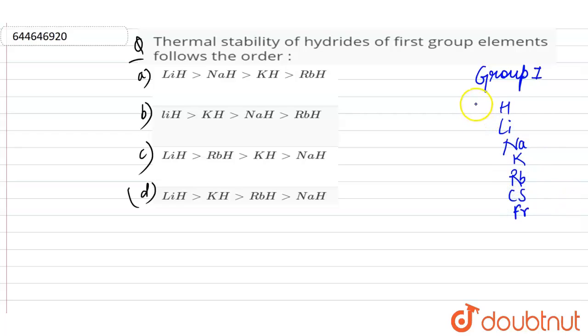As we move from top to bottom in a group, the size of alkali metals—these are alkali metals—increases. So the bond dissociation energy decreases, hence requiring less energy to break the bond.